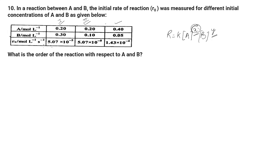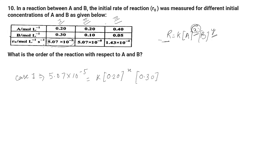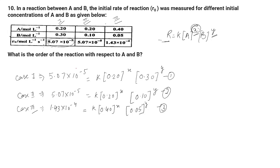Case 1, 2, and 3 are the three experimental values. We write the rate expression for each case. For case 1: 5.07 × 10⁻⁵ = k × (0.20)^x × (0.30)^y. Similarly, we write the rate expressions for case 2 and case 3. We need to find x and y by dividing these equations so that terms cancel.